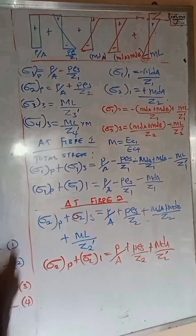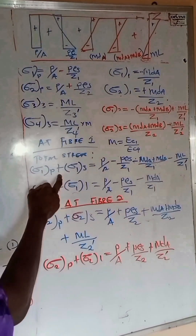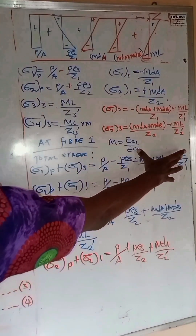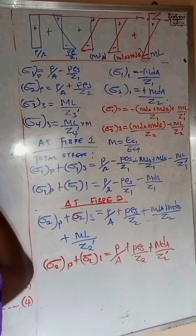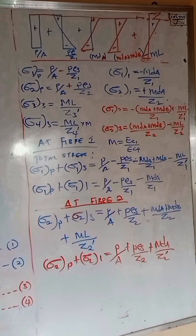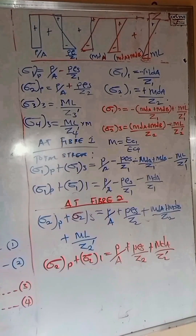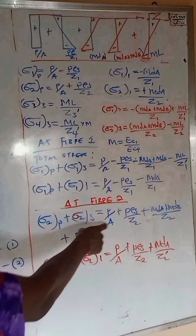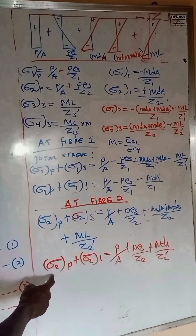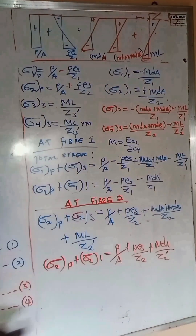Now let's look at the fiber stresses. At fiber one, the total stress combines the prestress contribution at fiber one for the precast section with the stress due to load combination three. Also at fiber one, we add the prestress plus the stress due to load combination one (M_DA). At fiber two, we have stress due to prestressing plus stress due to load combination one (M_DA).